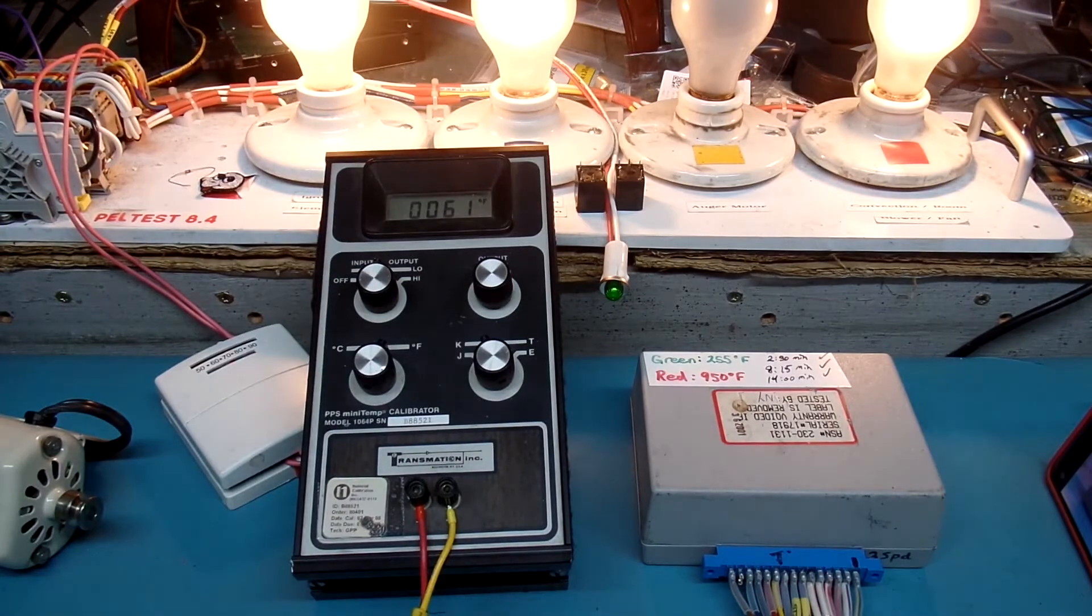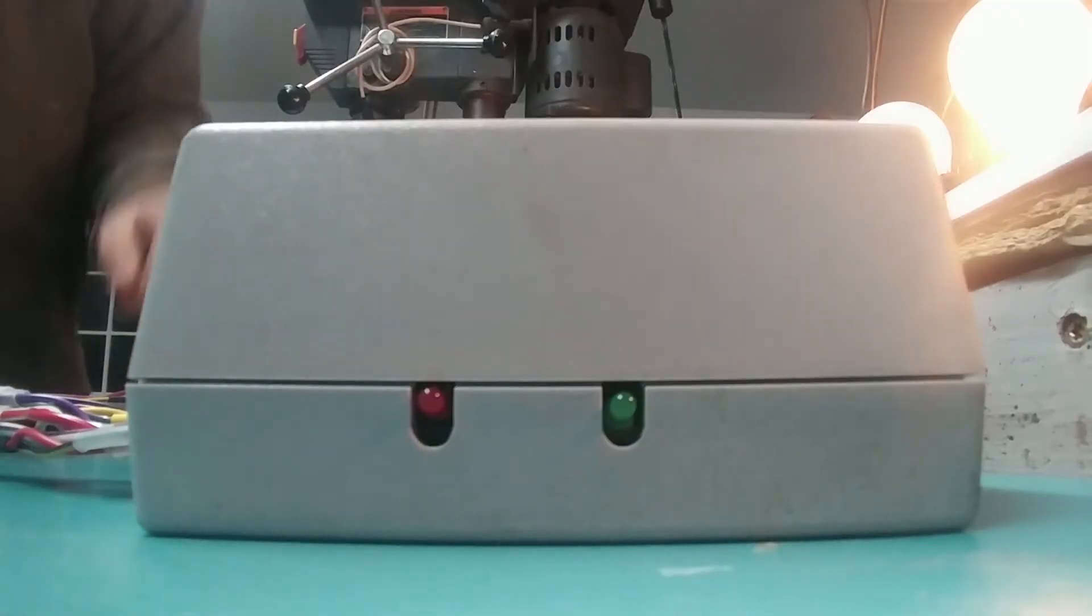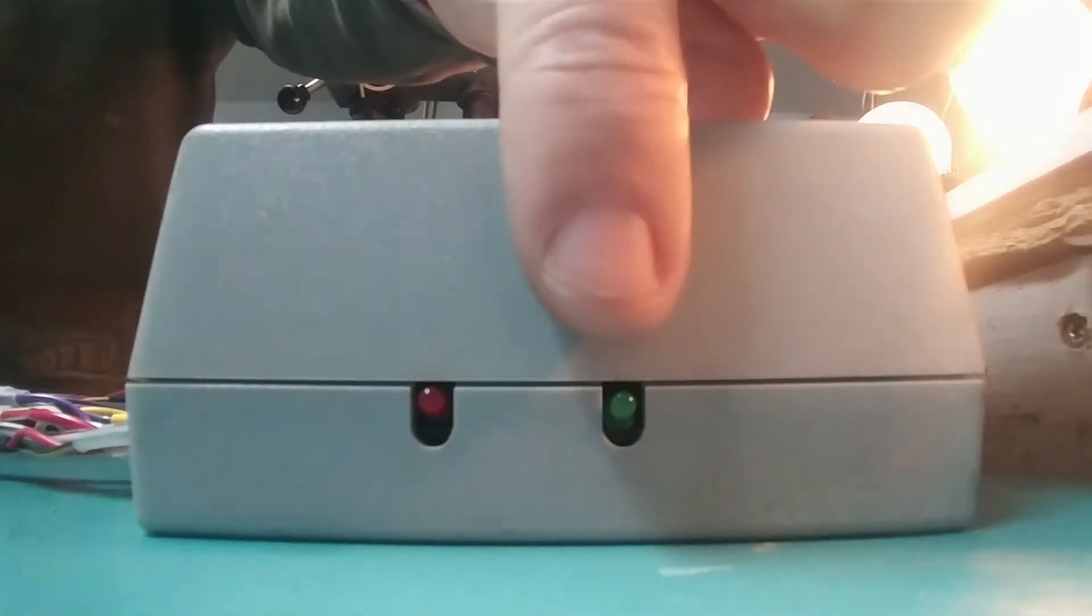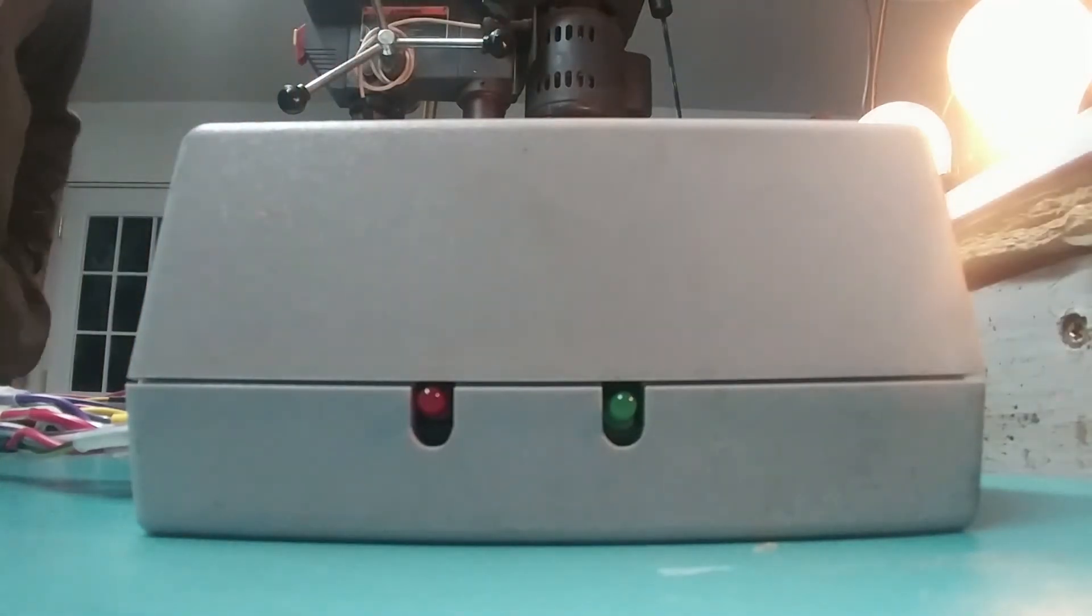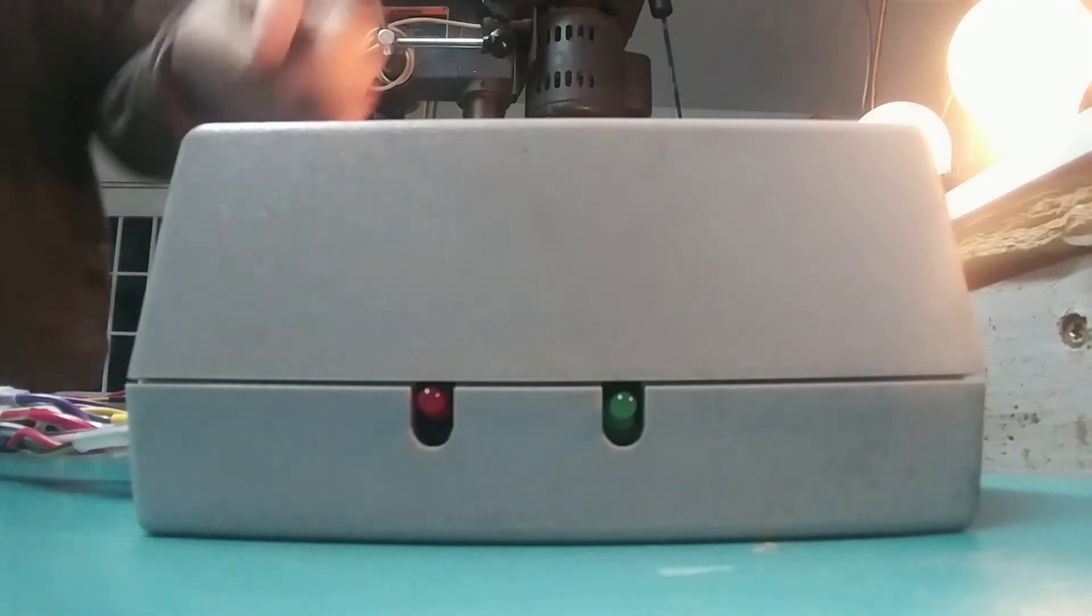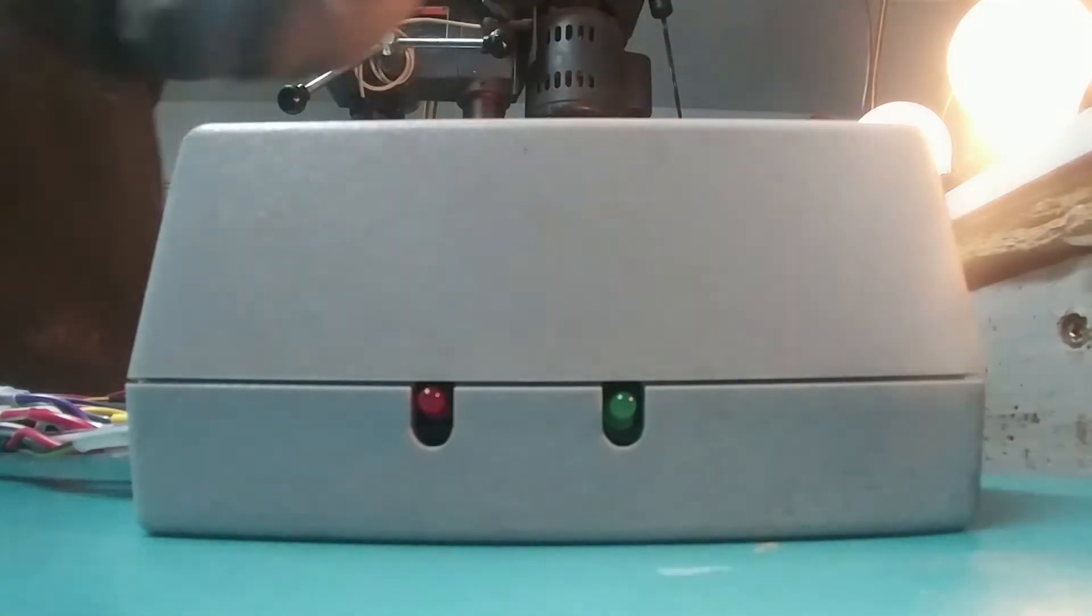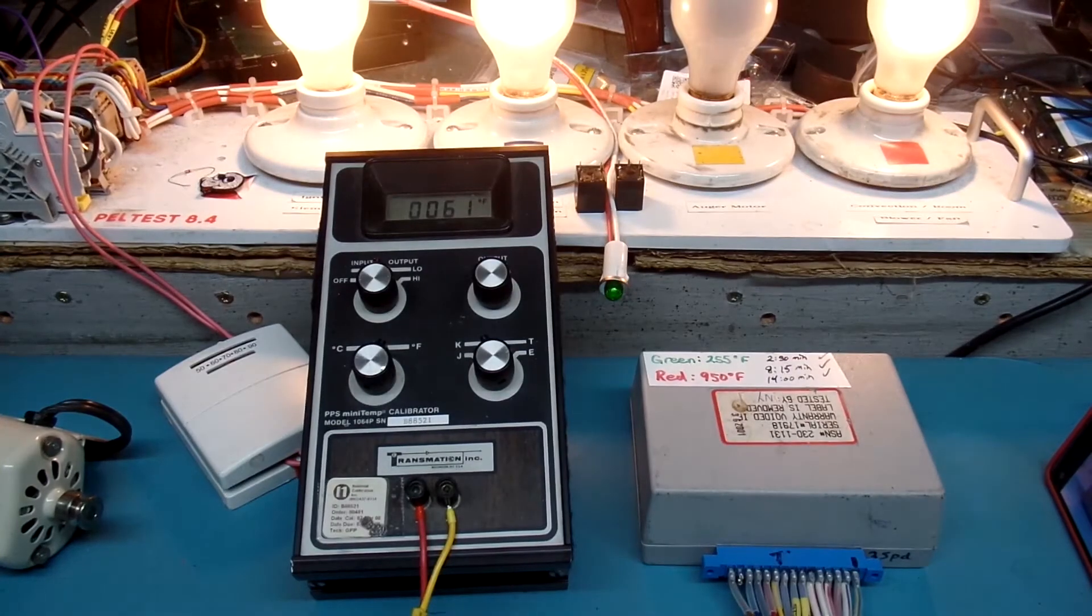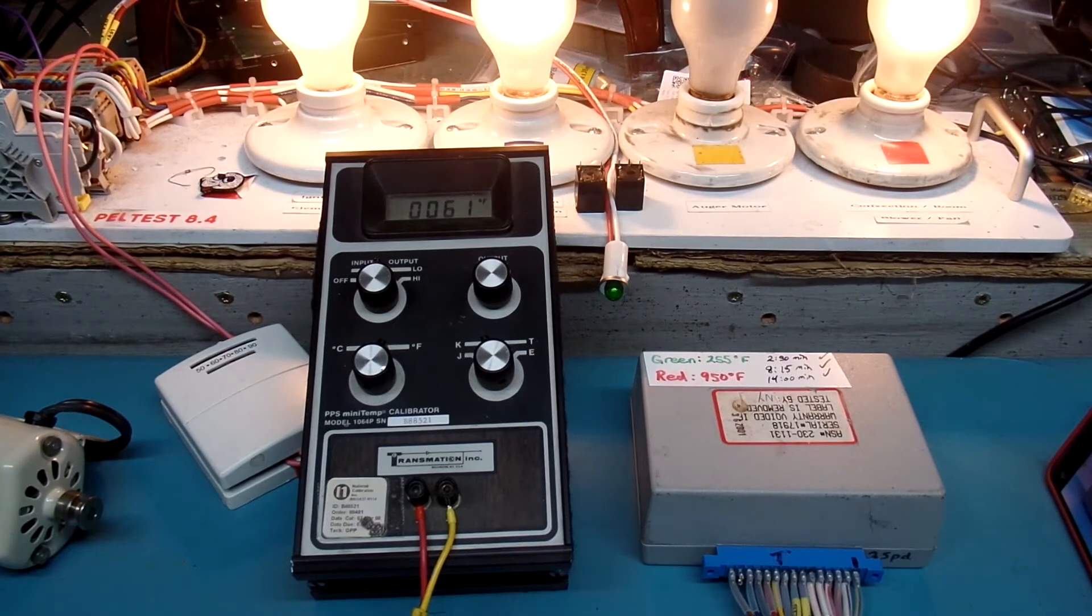I've also noted on the control that the green light on the side of the controller over here will come on at approximately 255 degrees Fahrenheit, and the red light also on the side of the controller over here will come on at approximately 950 degrees Fahrenheit. Now that we're calling for heat, let's raise the temperature of the fire pit, as seen by the thermocouple.